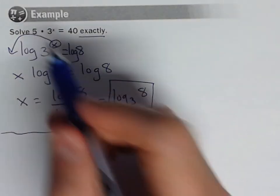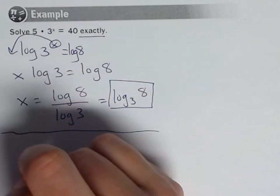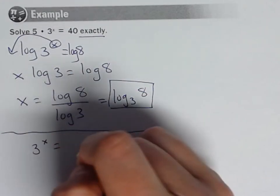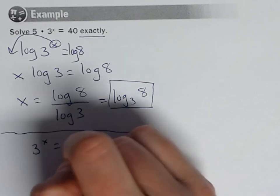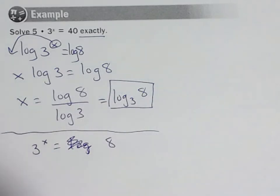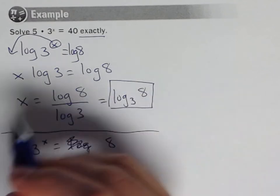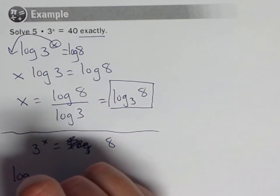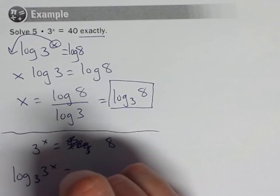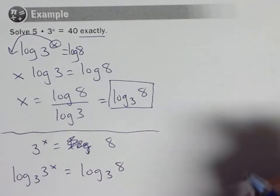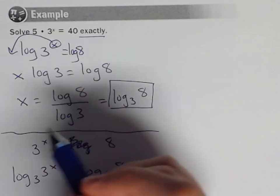Let me just show you an alternate way to do that. So if we go to the same place, 3 to the x equals 8—what if I just did log base 3 of both sides? So log base 3 of 3 to the x equals log base 3 of 8. And again, however you want to do it, you could still bring that down.